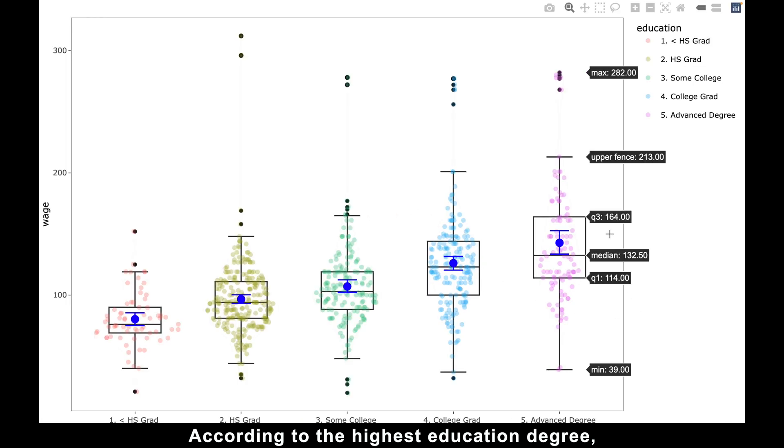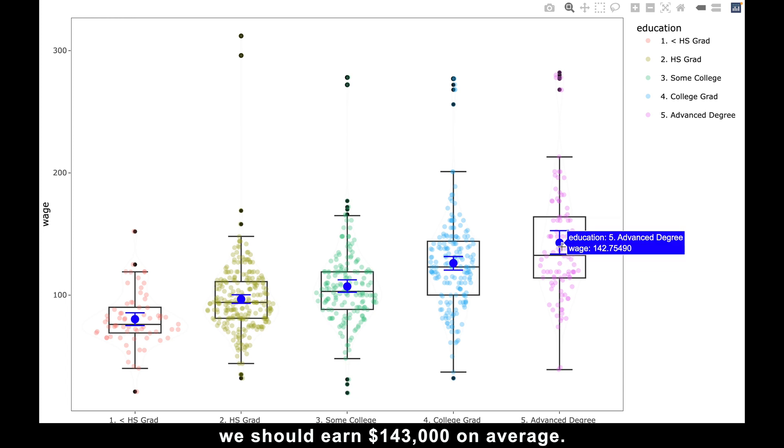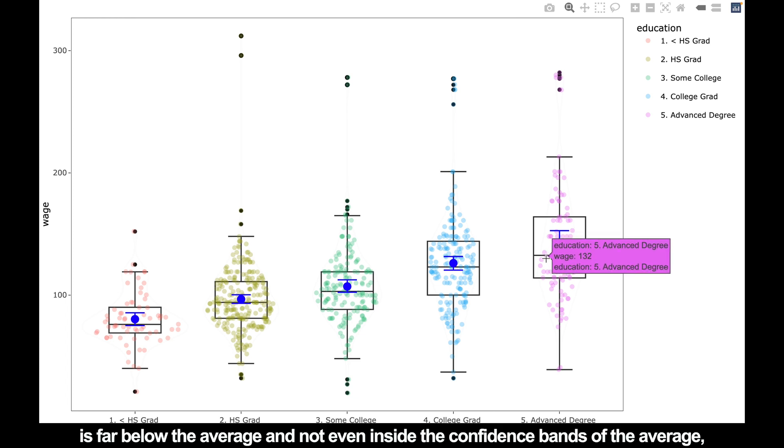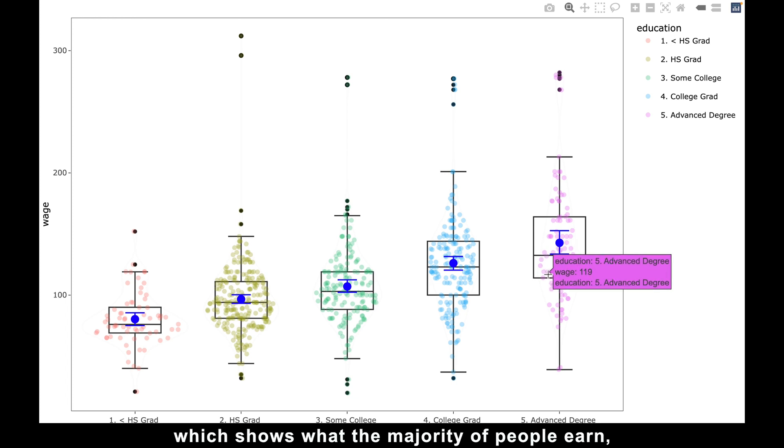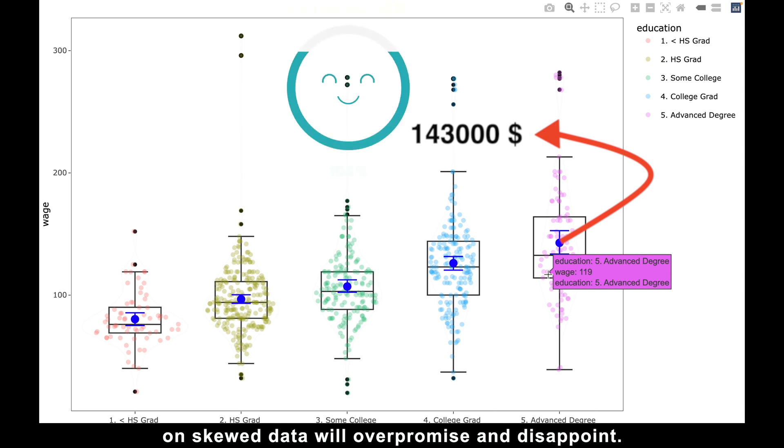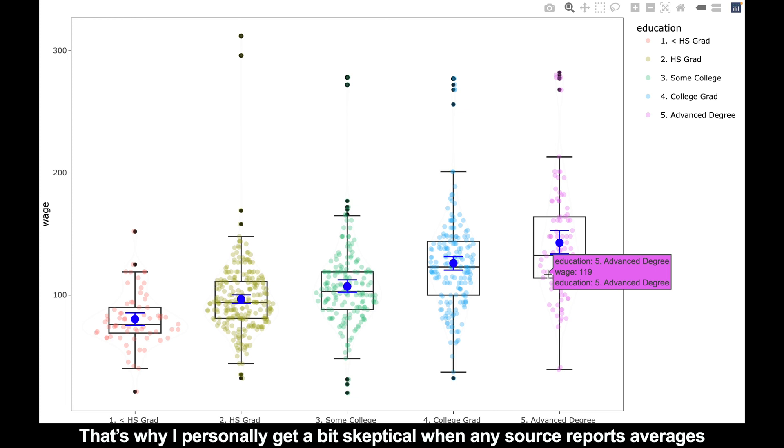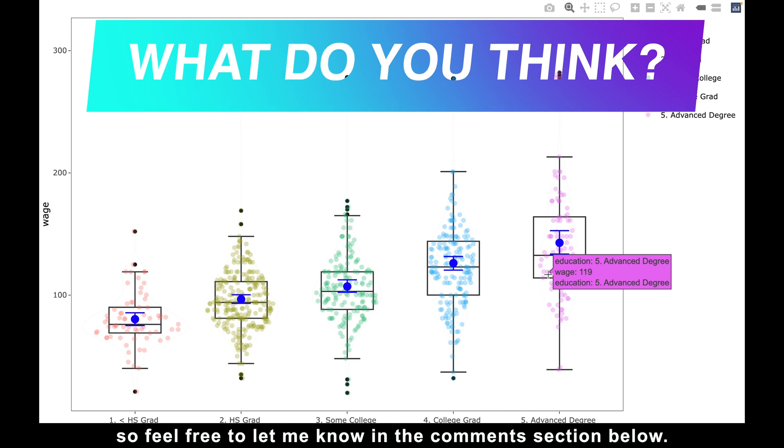According to the highest education degree, we should earn $143,000 on average. But since the median, with the $133,000, is far below the average and not even inside the confident bands of the average. And since the widest part of the violin, which shows what the majority of people earn is also far below the mean at $119,000, reporting the average salary of $143,000 on skewed data will over-promise and disappoint. That's why I personally get a bit skeptical when any source reports averages instead of medians. But I would be interested to know what you guys think, so feel free to let me know in the comment section below.